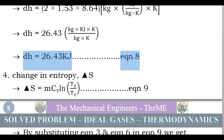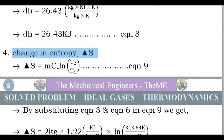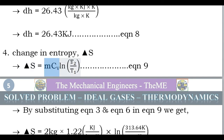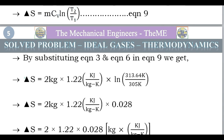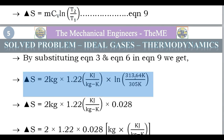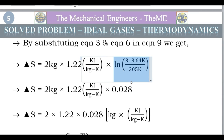Now we find the change in entropy ΔS. Since this is a constant volume process, the formula is ΔS = M·Cv·log(T2/T1). We know M = 2 kg, Cv = 1.22 kJ/kg·K, T2 = 313.64 K, T1 = 305 K. Therefore ΔS = 2 × 1.22 × log(313.64/305). Here log(313.64/305) = 0.028.